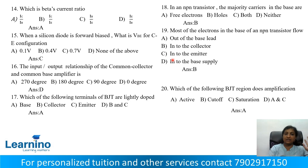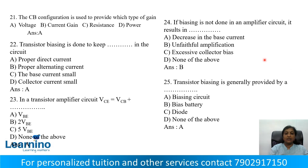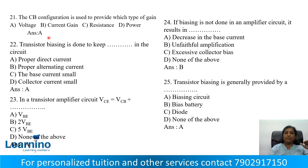Question number 20: Which of the following BJT regions does amplification? Option A: Active, Option B: Cutoff, Option C: Saturation, Option D: A and C. Correct answer is active region. Question number 21: The CB configuration is used to provide which type of gain? Options: Voltage, Current, Resistance, Power. Correct answer is Option A: Voltage gain.